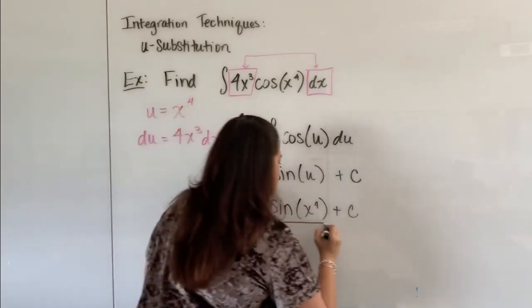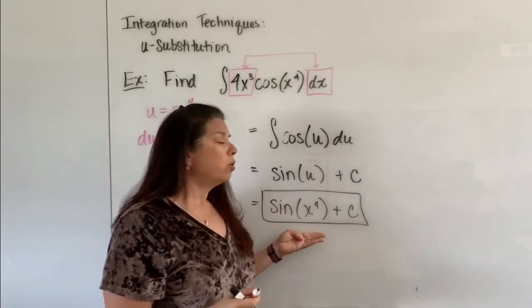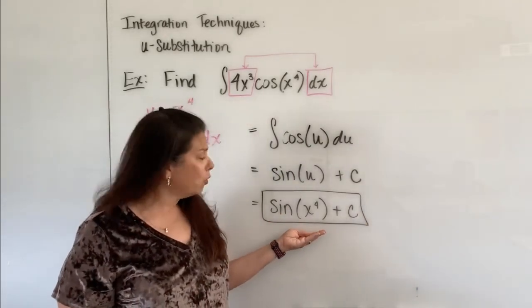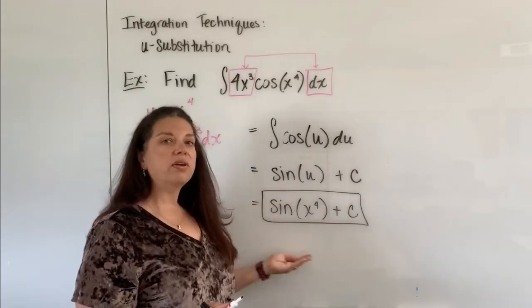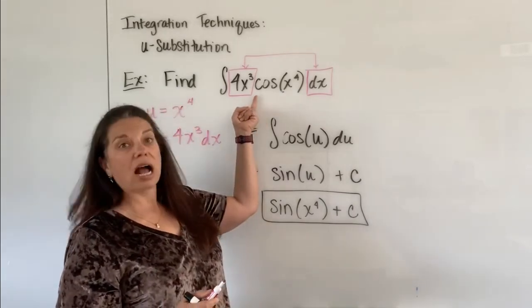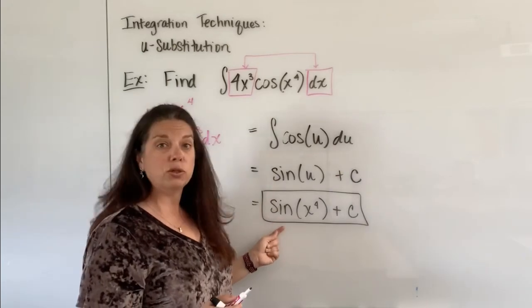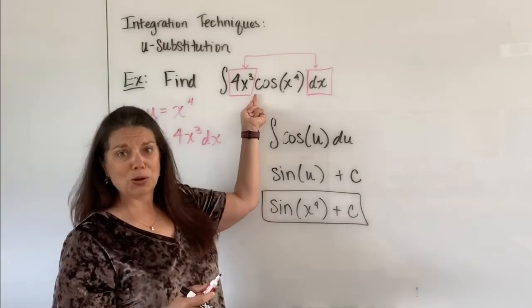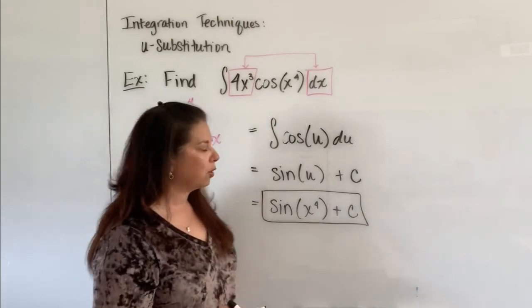Now we're ready to box and move on. Maybe even before you move on, by the way, you could check your answer here. All you would have to do is take the derivative of this particular function right here and make sure you get 4x³ cosine of x⁴. And by golly, when you do, you get 4x³ cosine x⁴. So that could be a way to check to make sure that you did your work okay.